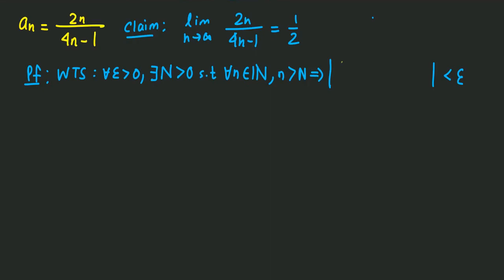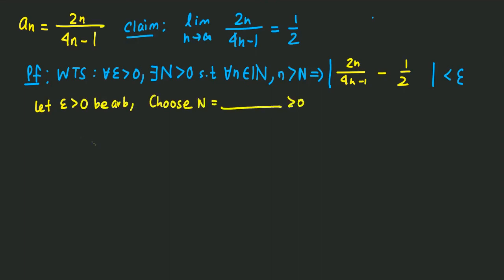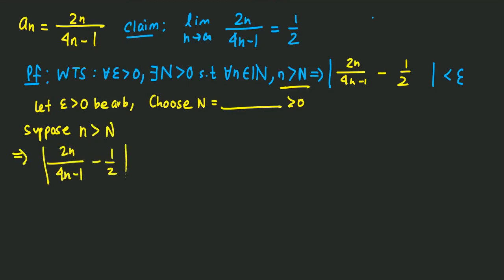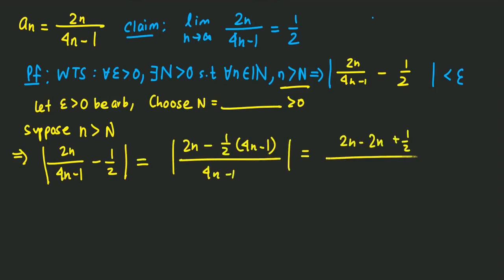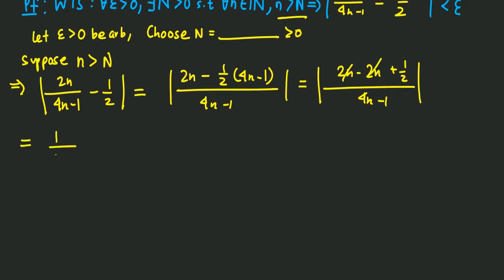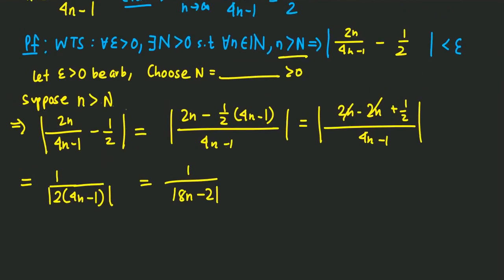We plug in A_n minus L into the formula, and then we let epsilon greater than 0 be arbitrary. We choose an N — leaving it blank for now — and do some algebraic manipulation to find what N will be. Bringing to common denominators, we can simplify down to one half times (4n minus 1) and then get 1 over (8n minus 2).